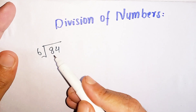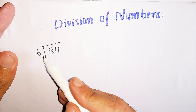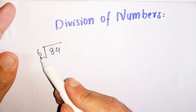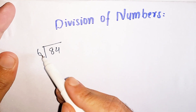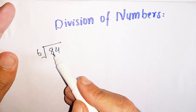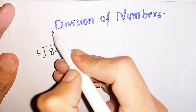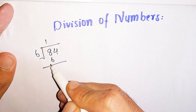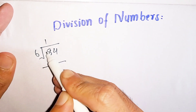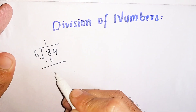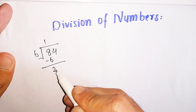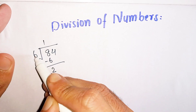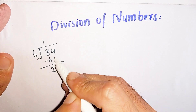In this example we are dividing 84 by 6. How many times does 6 go into 8? 6 times 1 is 6. Subtract 6 from 8, the remainder is 2. Now we cannot divide 2 by 6, so we